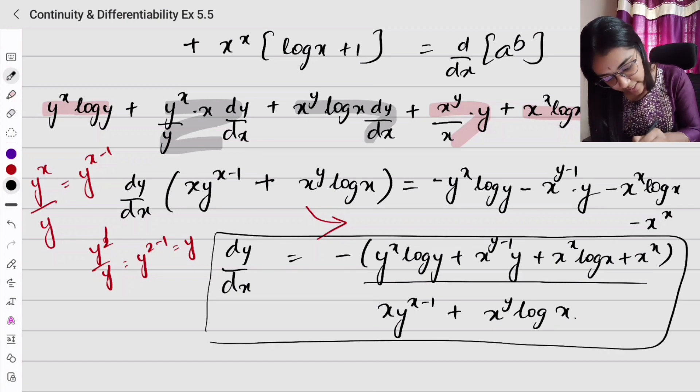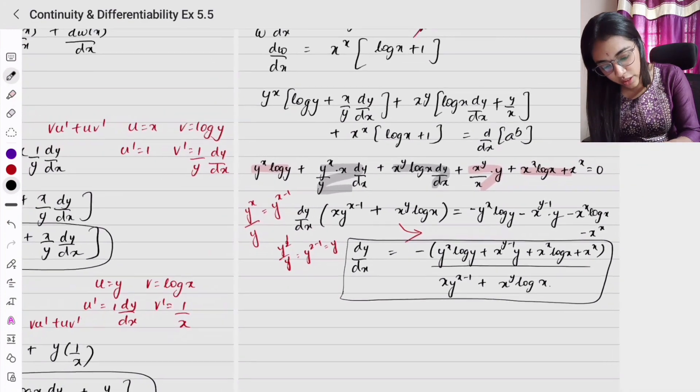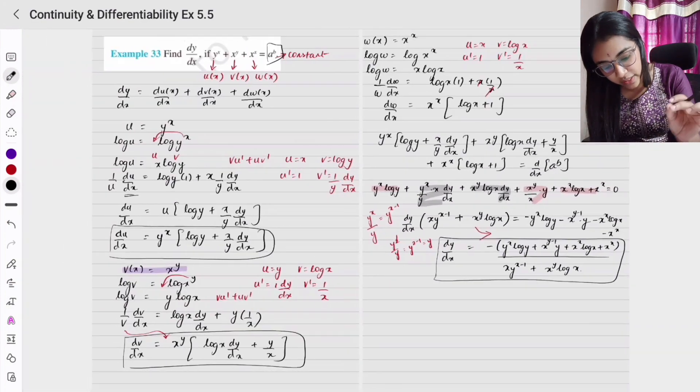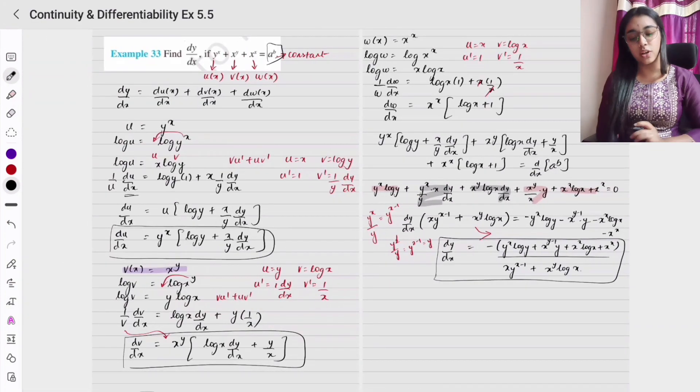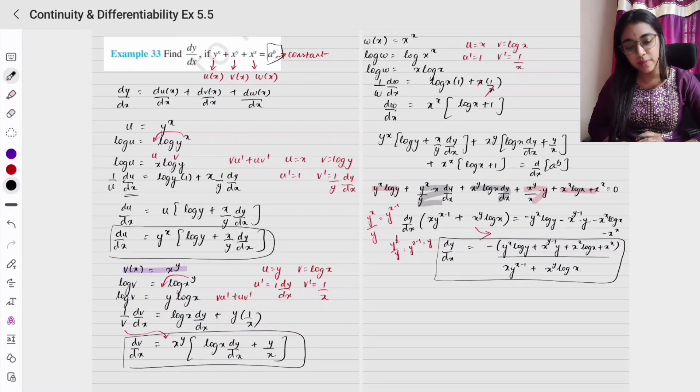So basically what we did here was split the function into three parts, differentiated each separately, and clubbed everything together. That is how we got the answer. Please copy.